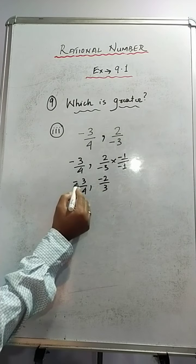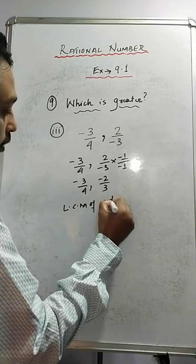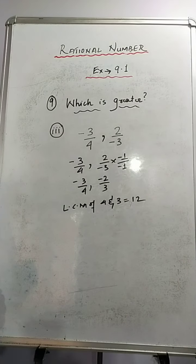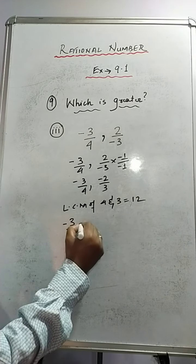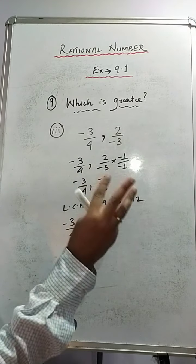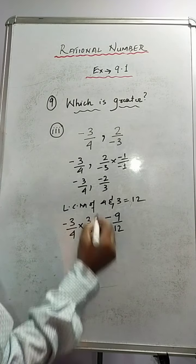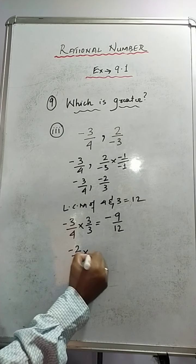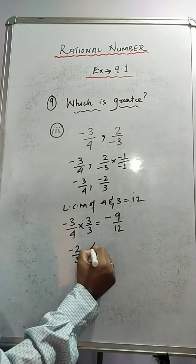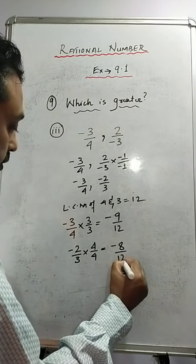Both rational numbers now carry the minus sign in the numerator. Find the LCM of 4 and 3, which is 12. For minus 3 by 4: 12 divided by 4 is 3, multiply 3 with both numerator and denominator to get minus 9 upon 12. For minus 2 by 3: 12 divided by 3 is 4, multiply 4 with both to get minus 8 by 12.